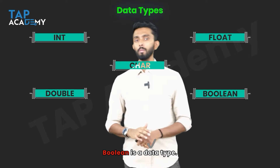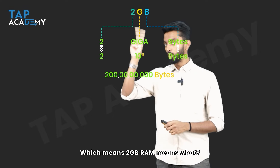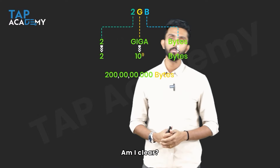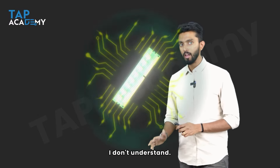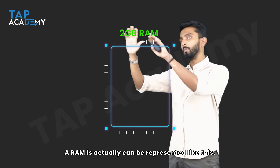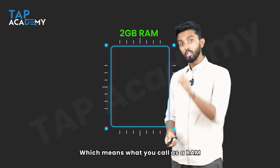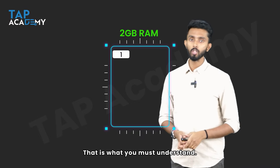So 2GB RAM means you have 200 crore bytes. If you visualize RAM, it is a collection of bytes — inside this RAM there are 200 crore bytes. That means what you call as a RAM is a collection of bytes. Similarly, 4GB RAM means 400 crore bytes, and 16GB RAM means 1600 crore bytes. The key point to enter everyone's mind is: when you say 2GB, 4GB, 16GB, 8GB — you are talking about crores and crores of bytes present inside a RAM. RAM is a collection of bytes — that is point number one.